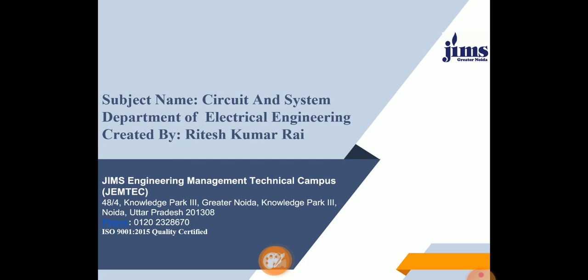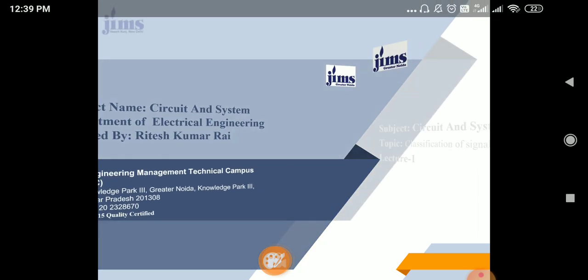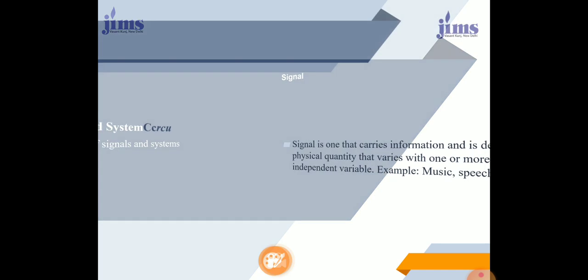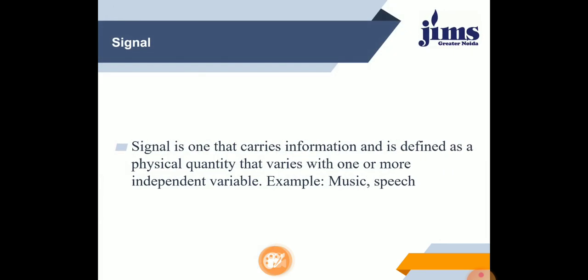Now I am going to discuss what is a signal and the classification of signal. First of all, a signal is a description of how one parameter varies with another parameter.